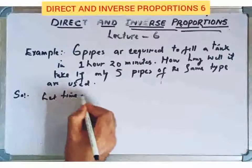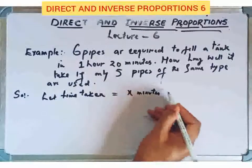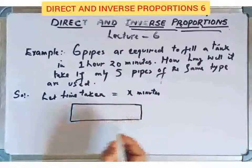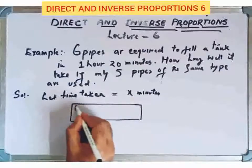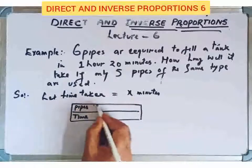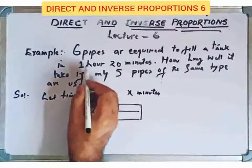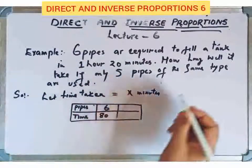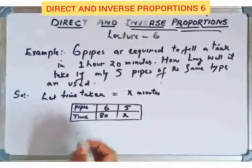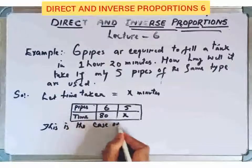Let the time taken equal x minutes. Now let's tabulate this information. We have a table with number of pipes and time in minutes. For 6 pipes, the time is 1 hour 20 minutes, which is 80 minutes. For 5 pipes, the time is x minutes. This is the case of inverse proportions.